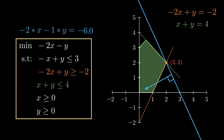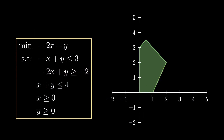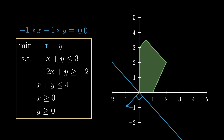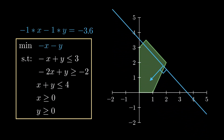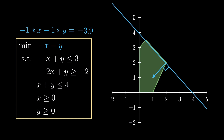But is this always the case? Let's change the objective to minimize minus x minus y. We again plot the line, and since we're minimizing the objective, we shift the line in the direction opposite the normal vector. In this case, we see that the entire edge of the feasible region is optimal, so there are infinitely many optimal solutions.